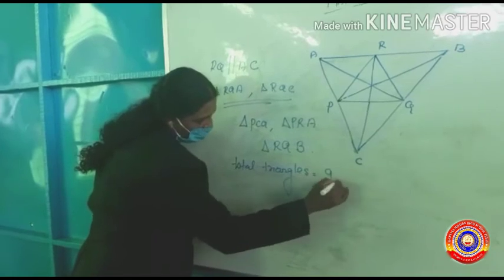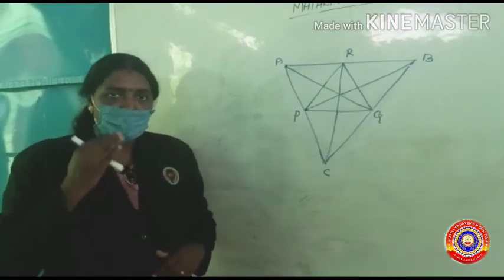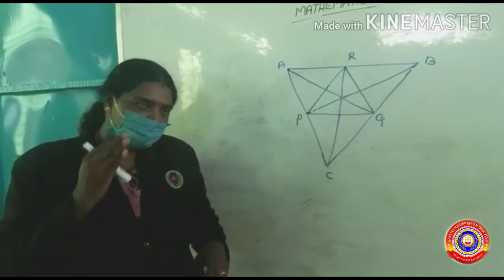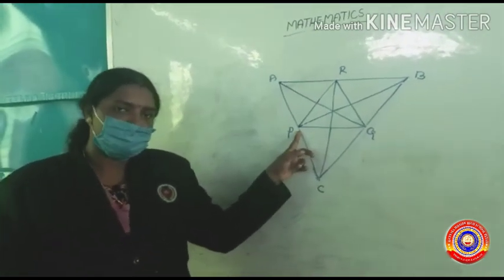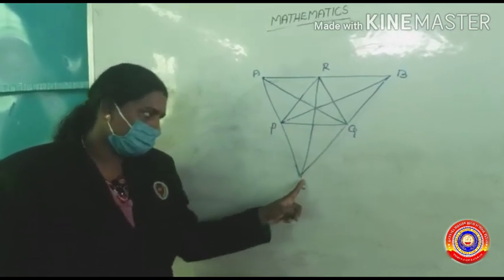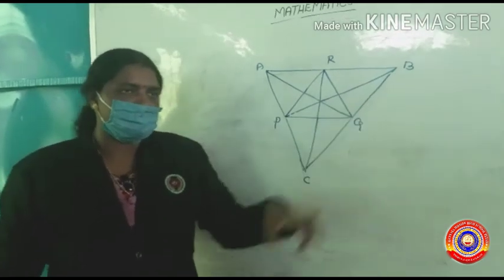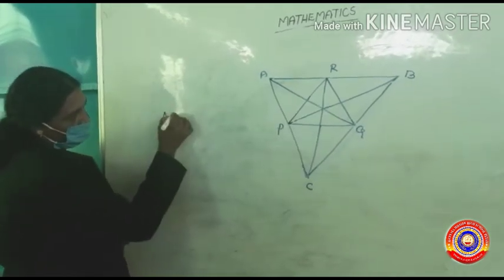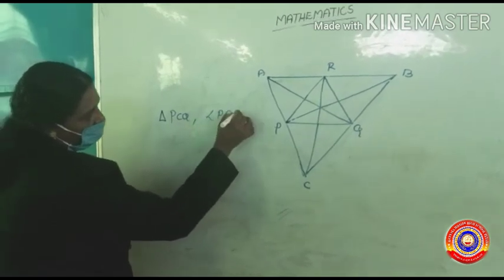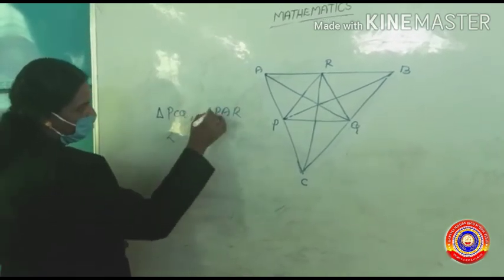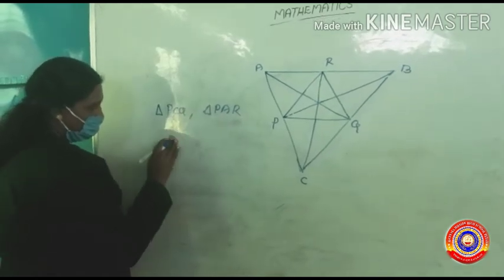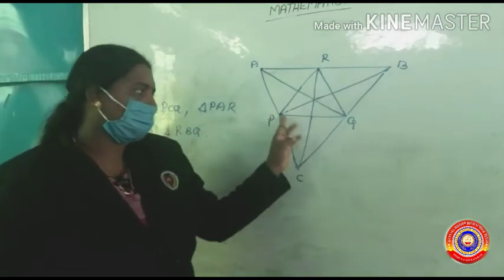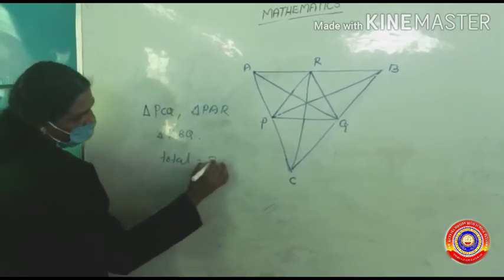In total, we got nine triangles having the same area as triangle PQR. Next, we have to find how many triangles have the same measures as that of the blue triangle. Three triangles have the same measures: triangle PQC, triangle PRA, and triangle RBQ.